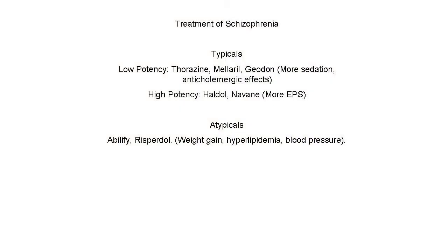The treatment of schizophrenia — the older medications are called the typicals. You have low-potency typicals such as Thorazine and Melaril, which cause more sedation and have anticholinergic effects. And then the high-potency medications like Haldol and Navein, which have more extrapyramidal symptoms.